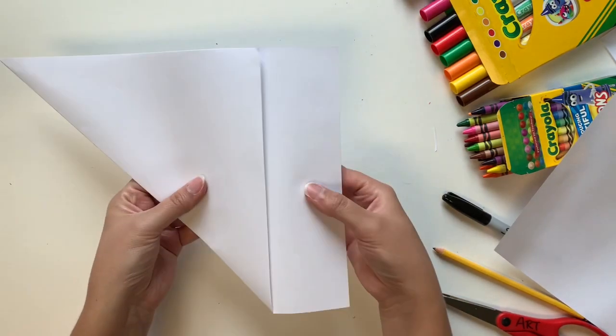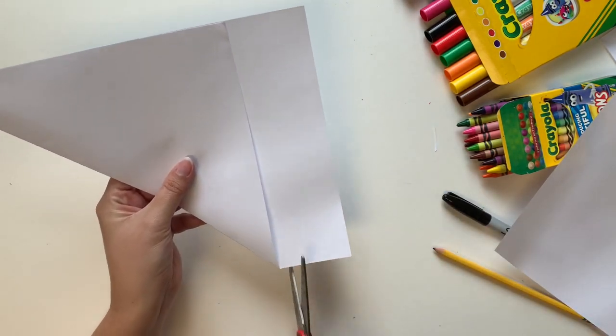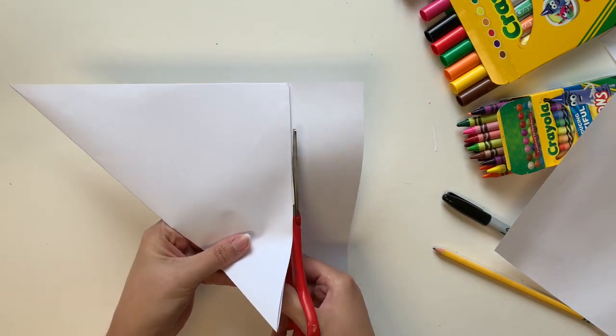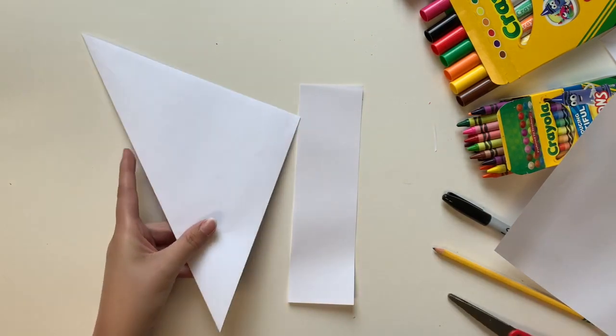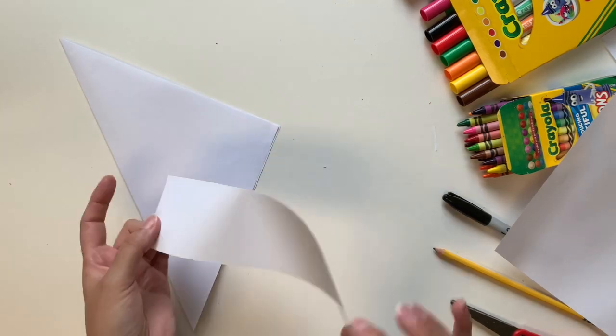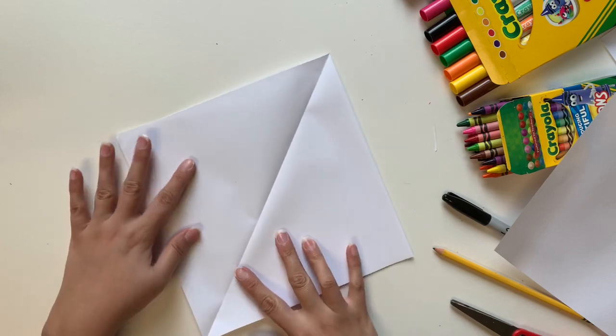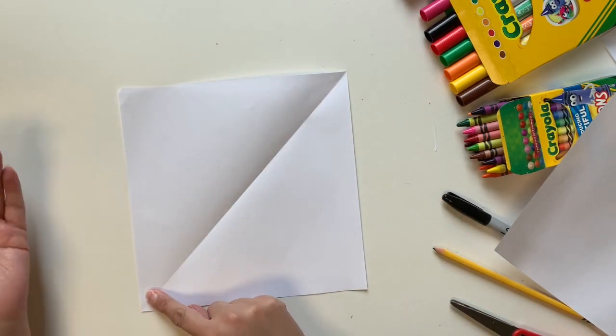I still have this little extra piece here. I'm going to take my scissors and cut off that extra piece. Then I can use this piece of paper as practice paper. So now I have one square when I unfold it and it's got one diagonal line through it.